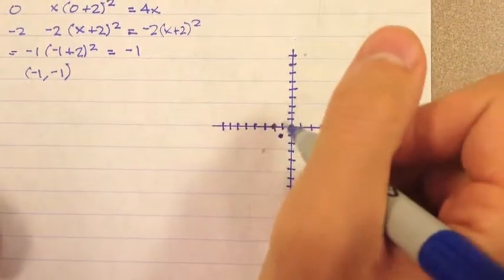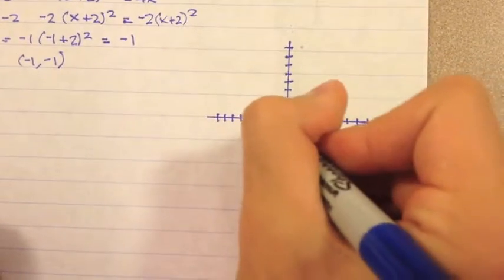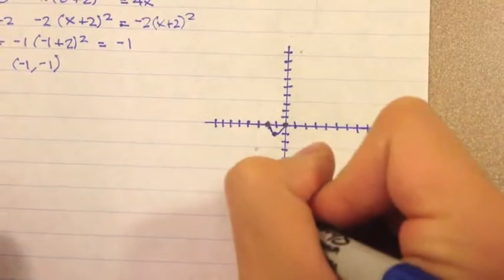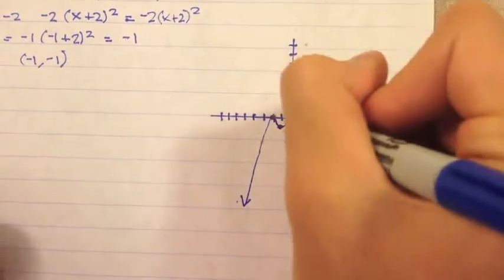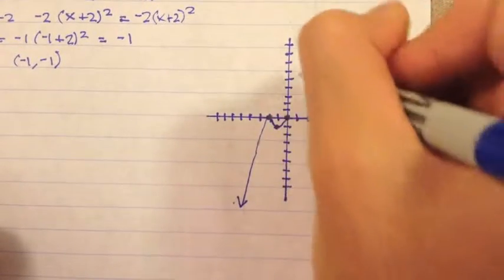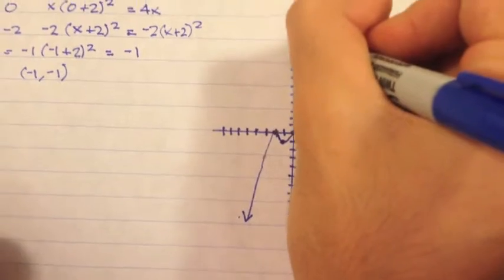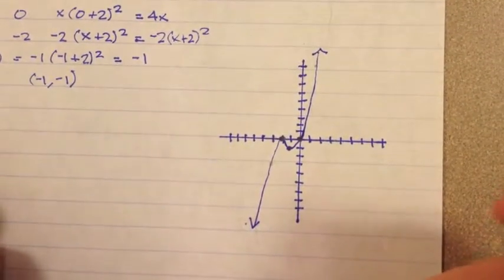And remember, the negative 2 has a multiplicity of 2, so it will touch. And then, our end behavior is going to look like that. And then, it crosses through 0 with a slope of 4x, with end behavior going up. And that's what the graph should look like.